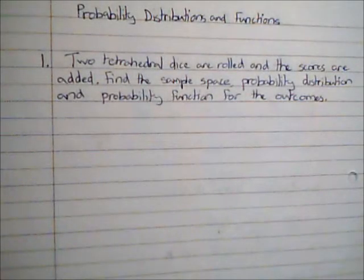In this video we're going to look at probability distributions and functions. To start with, we've got a problem that says two tetrahedral dice are rolled and the scores are added. Find the sample space, probability distribution, and probability function for the outcomes.